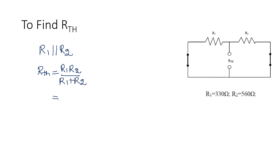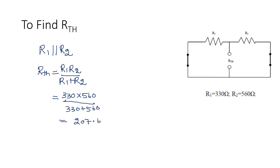Substituting the values: R1 is 330 ohm multiplied by R2 is 560 ohm, divided by R1 plus R2 which is 330 plus 560. If you simplify, you will get 207.64. Therefore, R-Thevenin is 207.64 ohm.